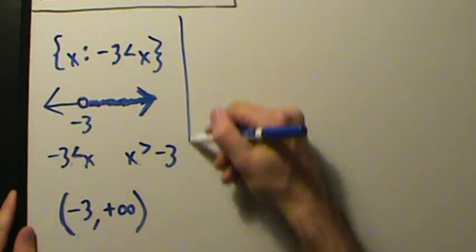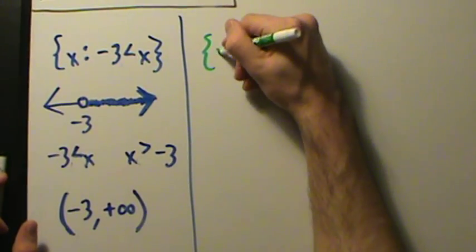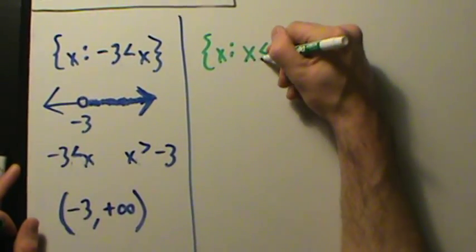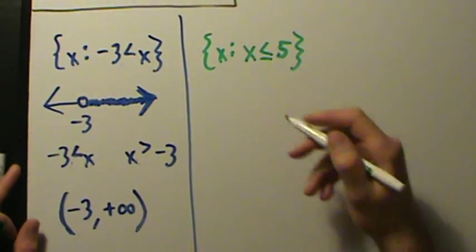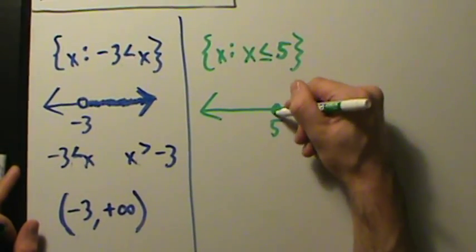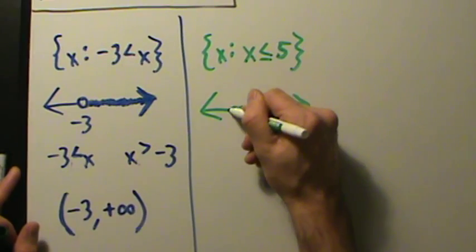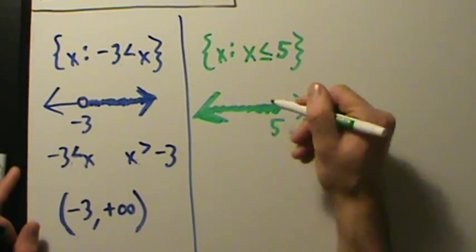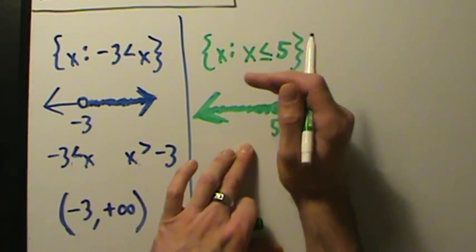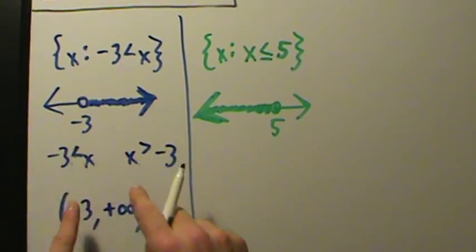Now what if we have something like the set of all x such that x is less than or equal to 5? Let's draw that on a number line. We put 5 over here with a solid filled-in circle, and since x is less than or equal to 5, that's everything to the left of 5, including 5 itself, going on infinitely far to the left. This is another type of infinite interval — bounded on one side but going infinitely far in the other direction.